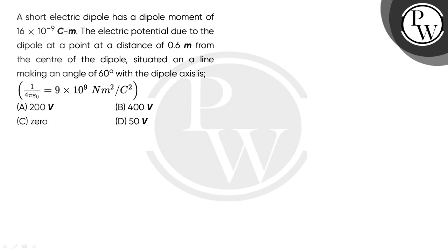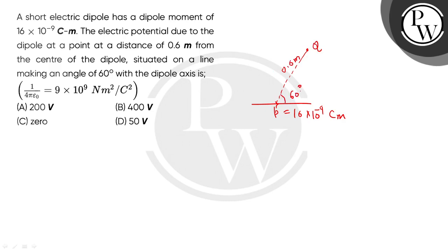We have a short electrical dipole, which is given the dipole moment of 16 × 10⁻⁹ C·m. There is a point which is at a distance of 0.6 meter. Let's take a point making an angle of 60 degrees with the dipole axis. Let's find out what the potential is.